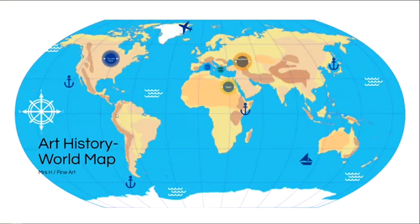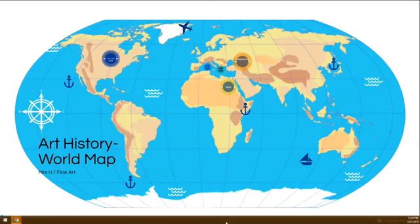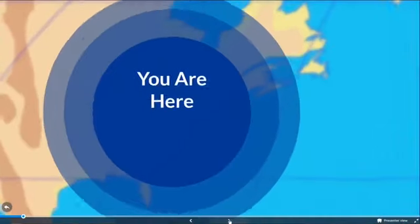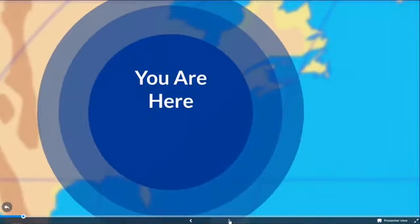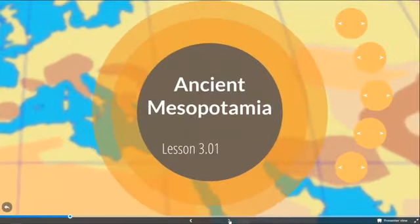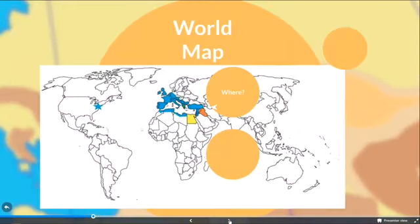Here's our world map and we are here — over in the United States and Pennsylvania. We are going to travel all the way across the world to Mesopotamia, which is right there. So Mesopotamia is sort of in modern-day Iraq.